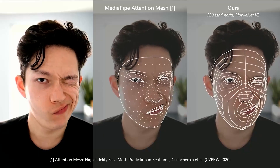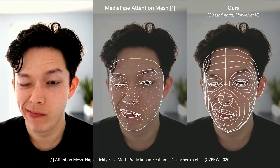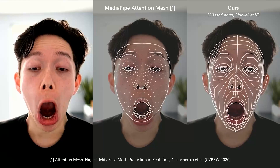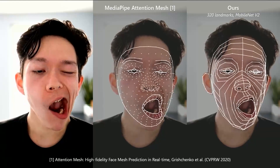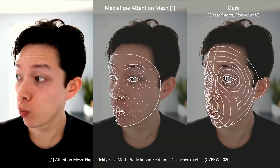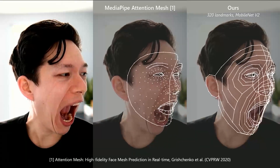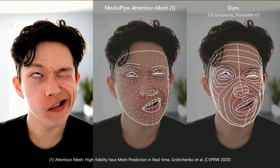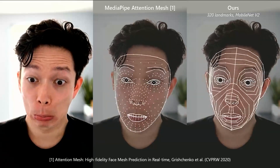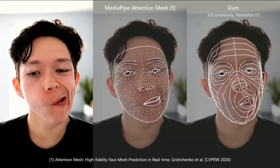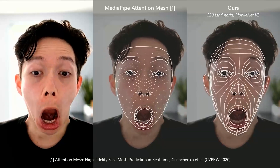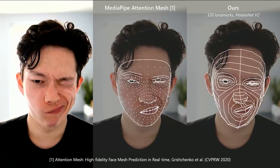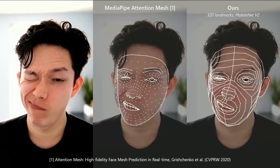Here is a comparison between our dense landmarks, predicted with MobileNet V2, and MediaPipe Attention Mesh, a publicly available method for face mesh prediction. Our method, while being similarly efficient, better handles facial expressions. Considering the similarities of our approach to MediaPipe, we guess the difference is partly in the data — our method benefits from diverse, perfectly labeled synthetic training data.